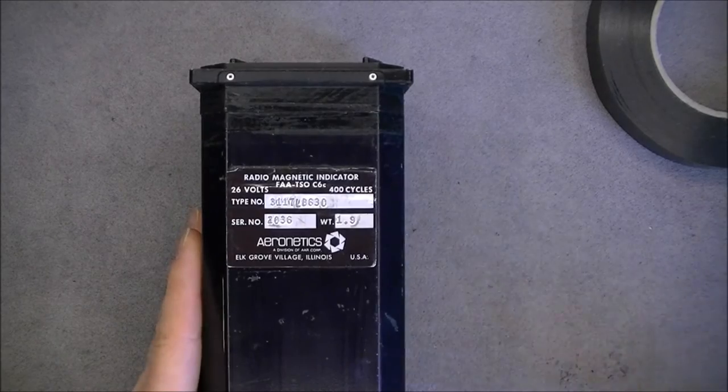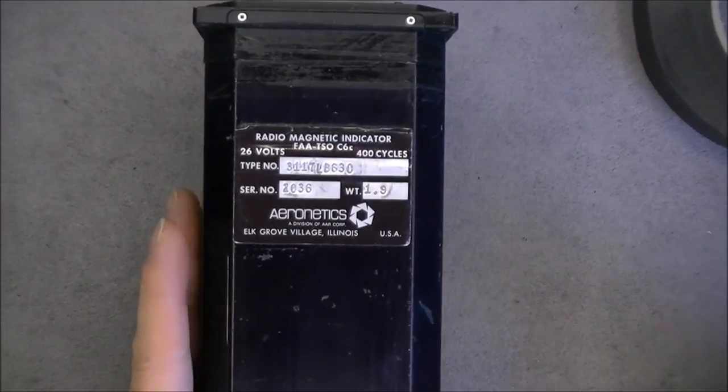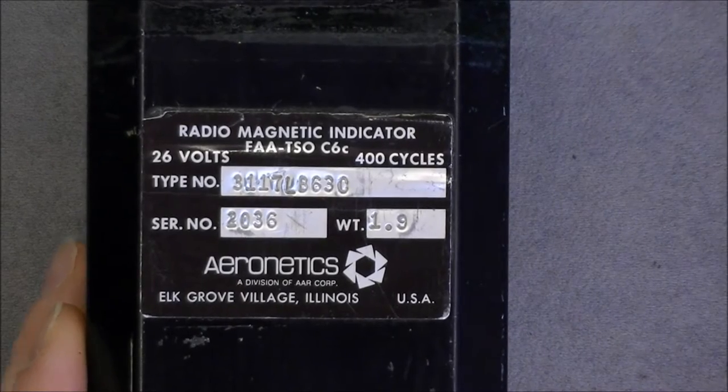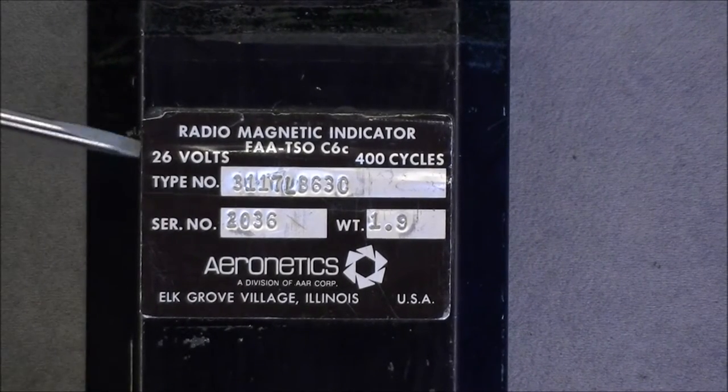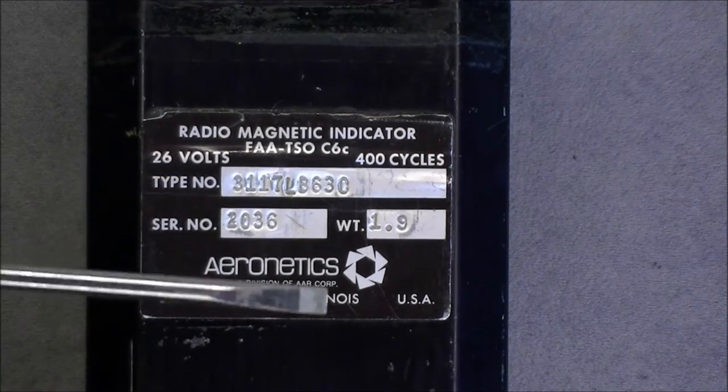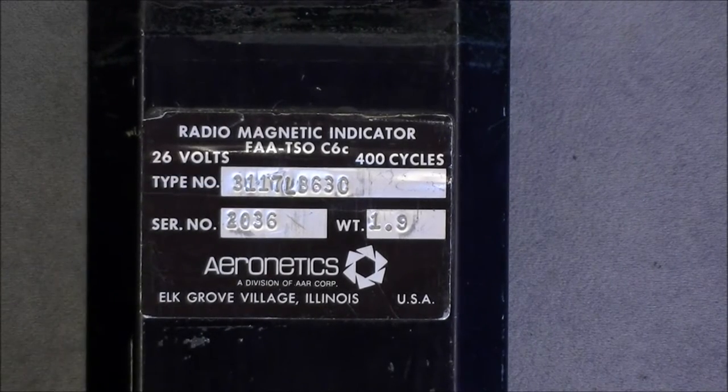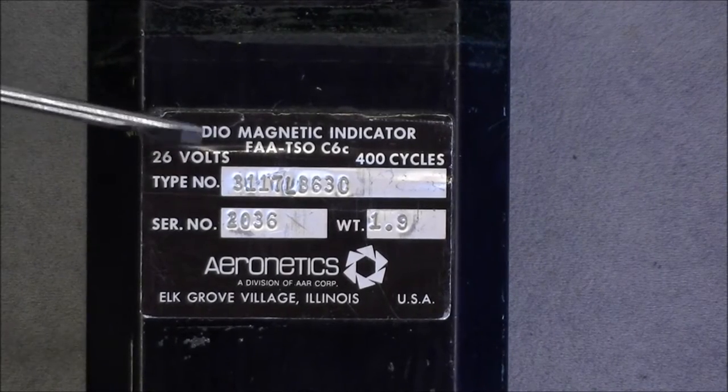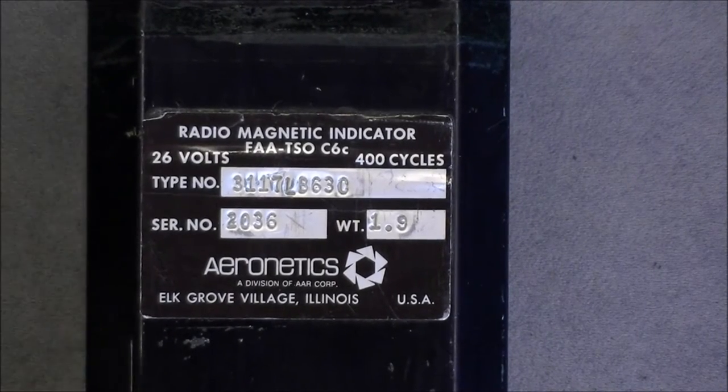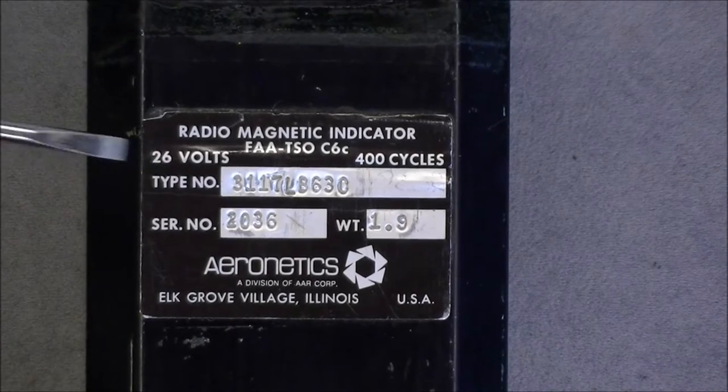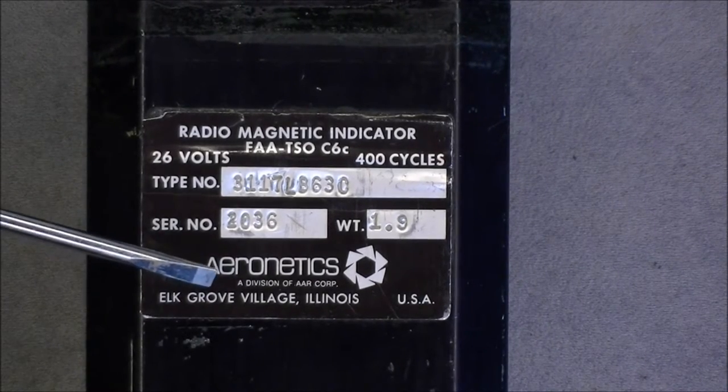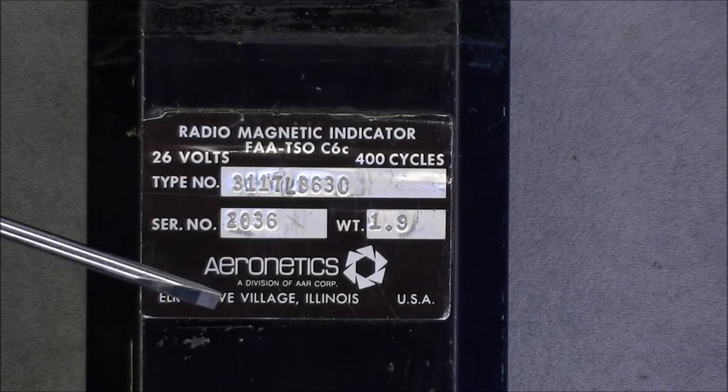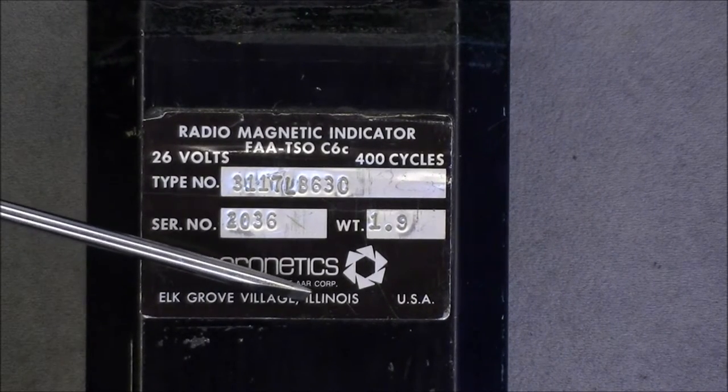Now we can zoom on the manufacturer label. As you can see, it is given for a 26 volts power supply, 400 cycles. I believe it is the power supply you need for the synchro transmitters and resolvers inside because there is not built in power converter in this thing. It is made by Aeronautics division of AAR Corporation in Elk Grove Village, Illinois, USA.